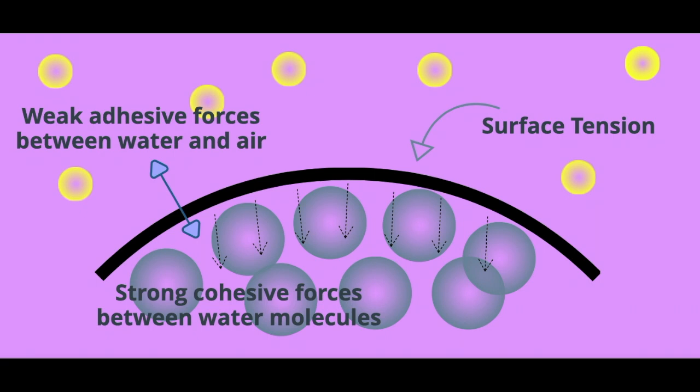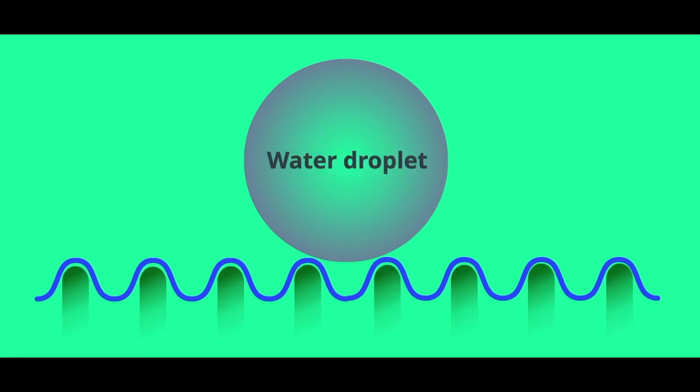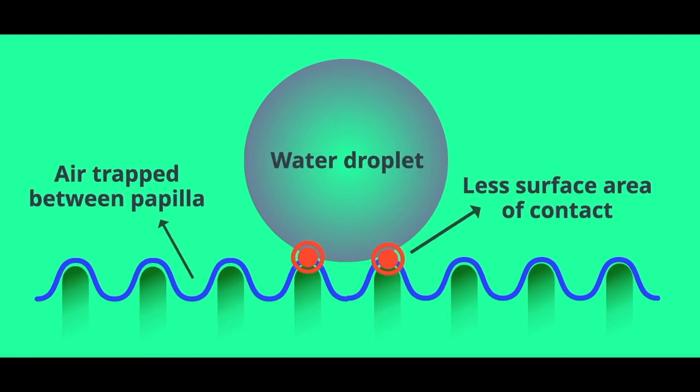The air trapped in between papilla reduces the water-to-leaf surface contact area. Therefore, water forms spheres which increases the contact angle to over 150 degrees.